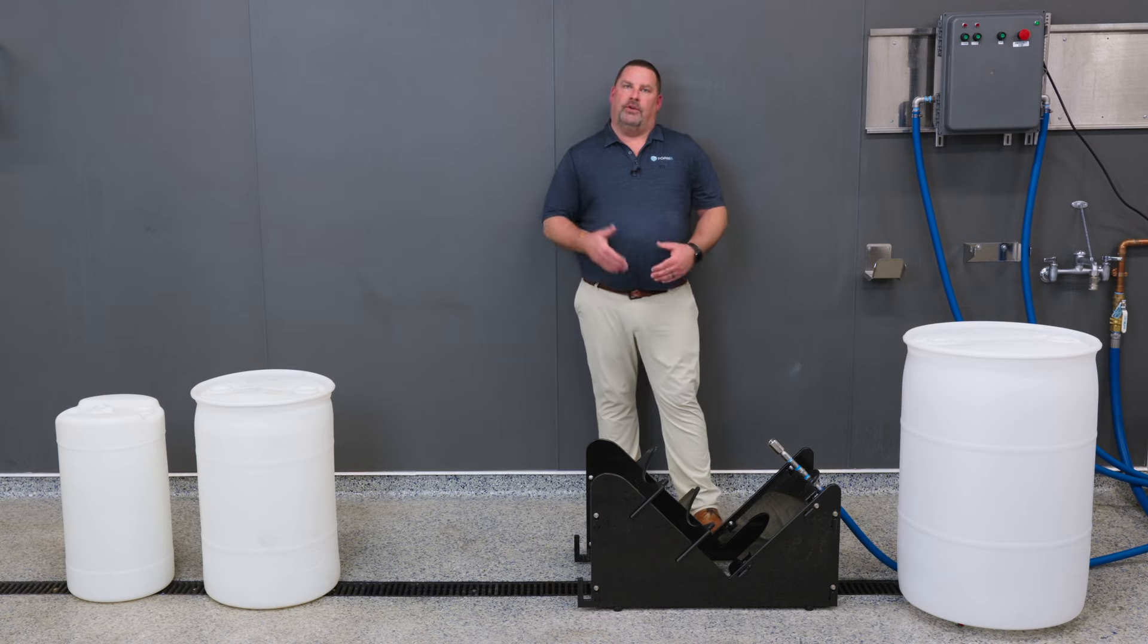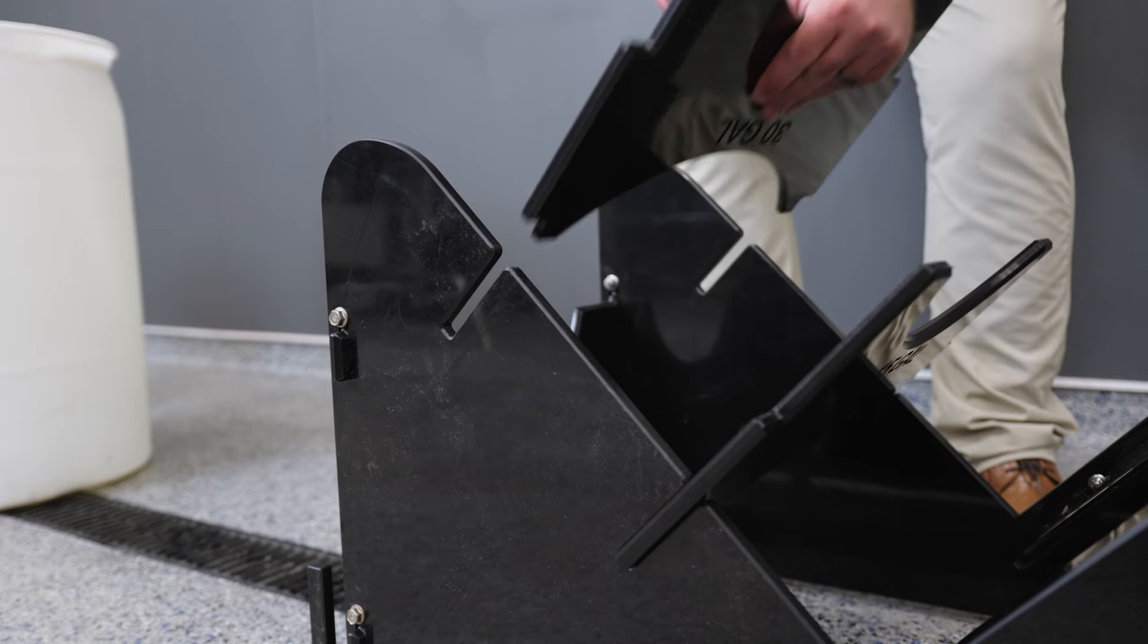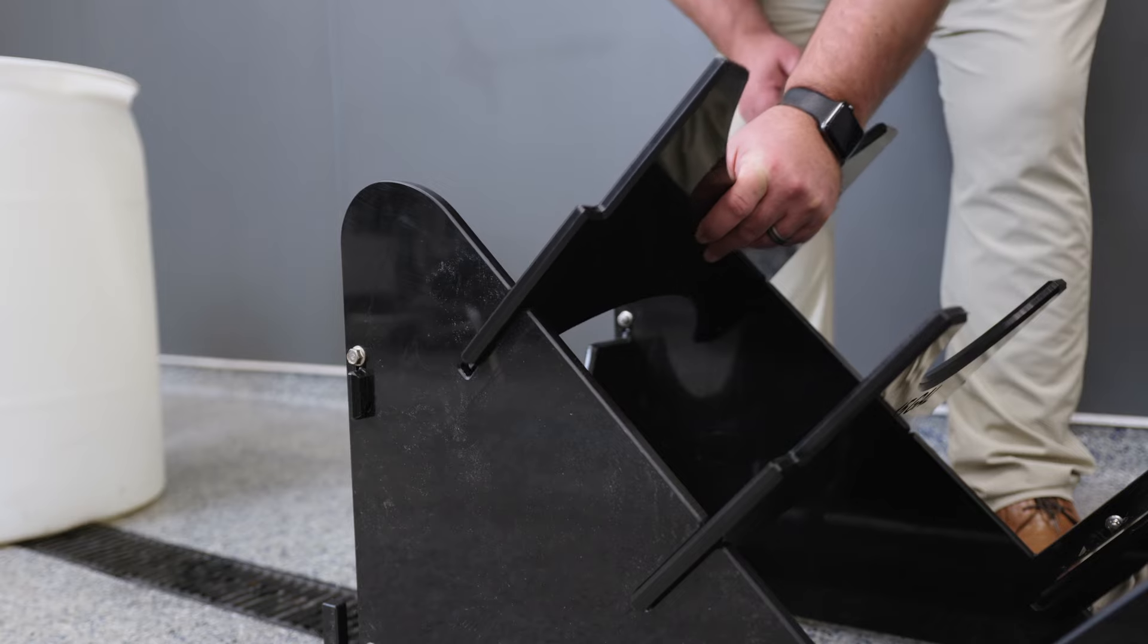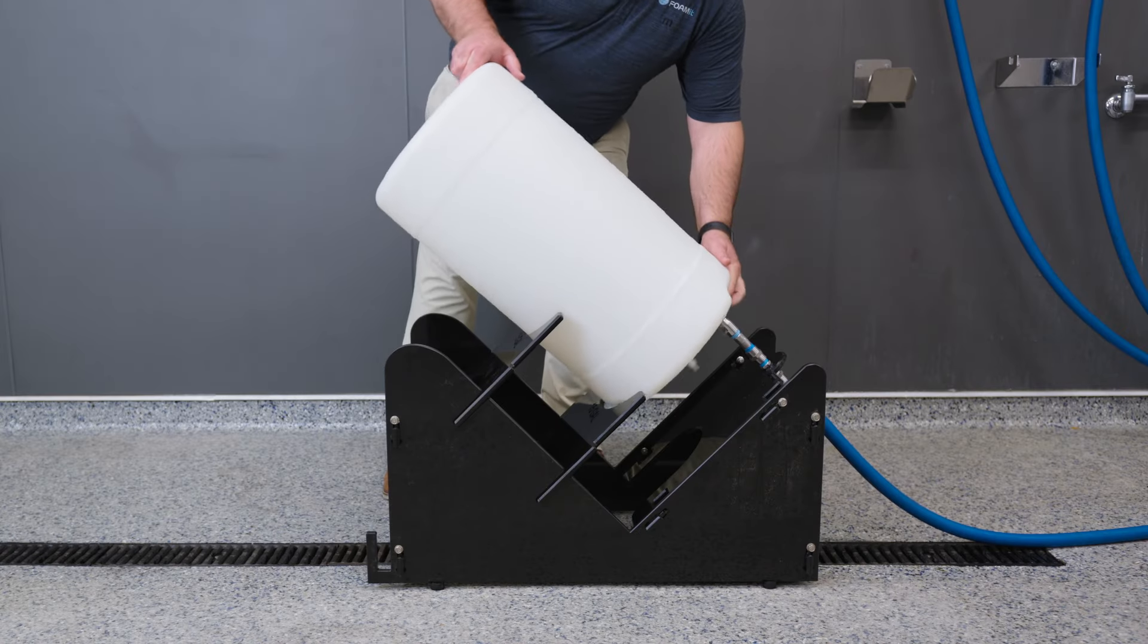To change from a 30 gallon drum to a 15 gallon drum, simply remove the plates, turn them over, reinsert them, and you're ready to go with a 15 gallon drum.